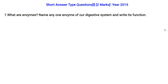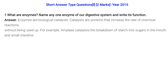The first question: what are enzymes? Name any one enzyme of our digestive system and write its function. Enzymes are biological catalysts — proteins that increase the rate of chemical reaction and are not used up. For instance, amylase catalyzes the breakdown of starch into sugars in the mouth and also in the small intestine.